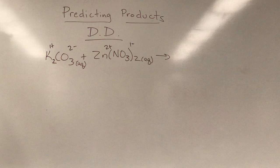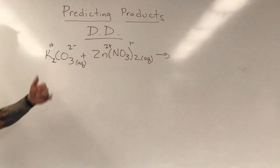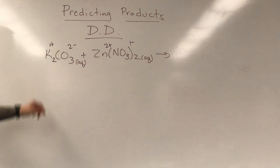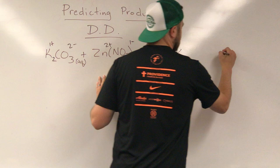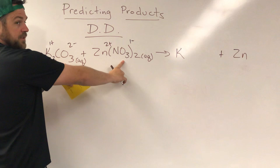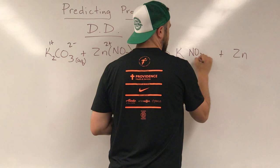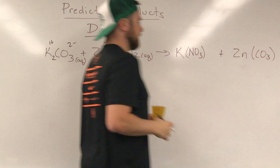So we have our charges, we can go ahead and get started. We're going to do it exactly the same. We're going to cross what's bonded to each other, and we're going to make sure to cross charges along the way. We'll worry about state symbols at the very end. So I'm going to leave potassium right where it is, I'm going to leave zinc right where it is. I am just going to switch where these two guys are. So now nitrate is going to come over here and bond to NO3, and now carbonate is going to come over here and bond to zinc.